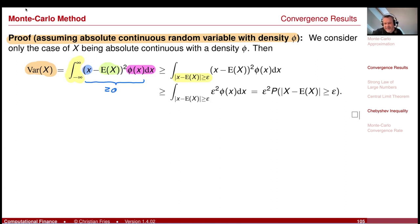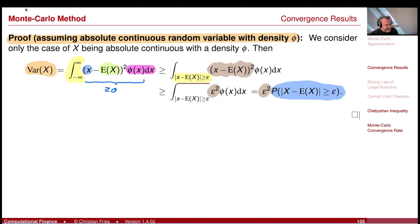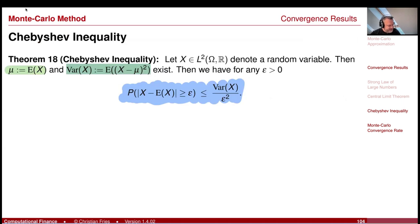If we restrict the integration domain to the set where X deviates from the expectation by more than epsilon, we make the integral smaller, because the integrand is non-negative — we are cutting out a part. Furthermore, on this restricted domain we know that |x minus mu| is at least epsilon, so replacing (x minus mu) squared by epsilon squared makes the integral even smaller. We can then factor epsilon squared out front, and the remaining integral is just epsilon squared times the probability that X deviates from mu by more than epsilon. Dividing both sides by epsilon squared gives the Chebyshev inequality.